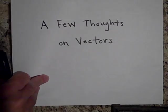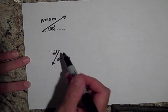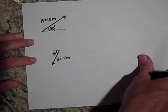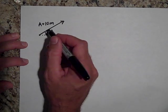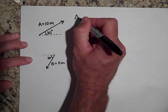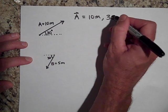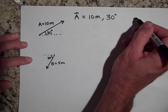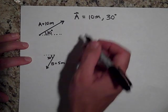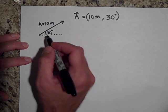Let's first take a look at two vectors, A and B. Here's vector A and here's vector B. There are two ways to write these vectors. Vector A can be written as 10 meters at 30 degrees — and if I don't write anything else, that means relative to the positive x-axis. That's one way to write it.